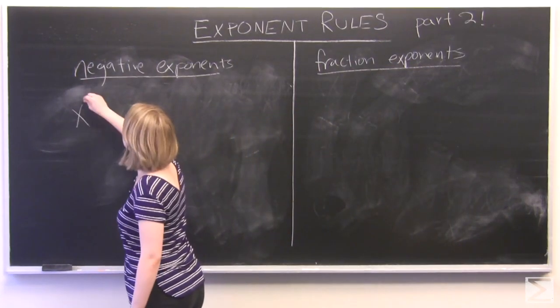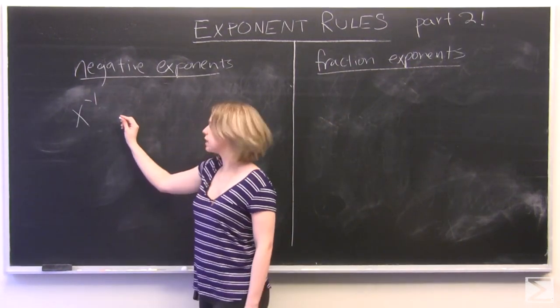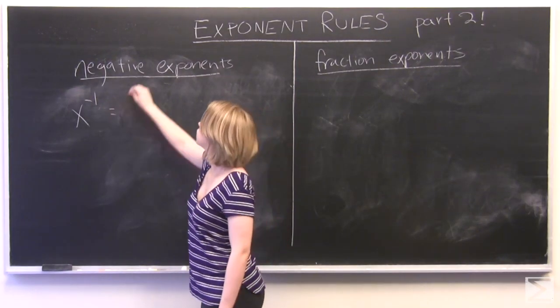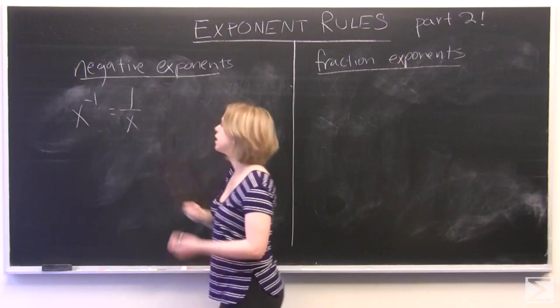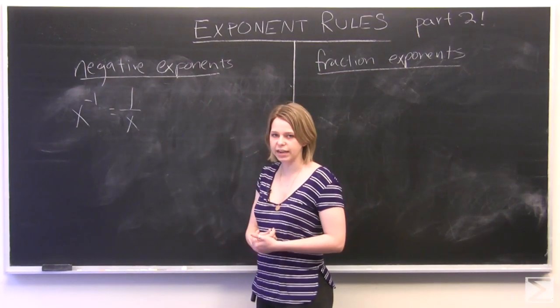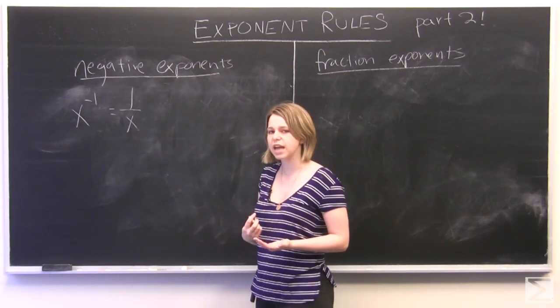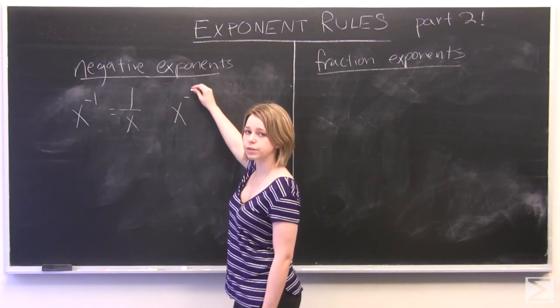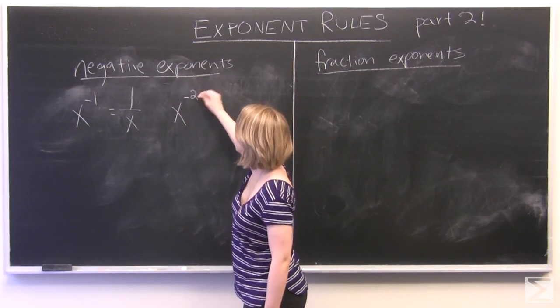One of our laws of exponents states that x to the power of negative 1 is simply the inverse of x, which is 1 over x. We can explore the rest of the negative exponents and understand what's happening here just by using our rules that we explored in the first video.